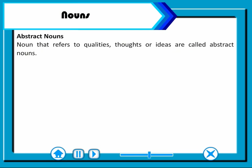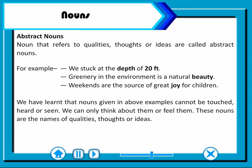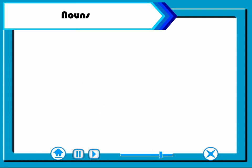Abstract nouns are nouns which refer to qualities, thoughts or ideas. For example: we struck at the depth of 20 feet. Greenery in the environment is a natural beauty. We can find a source of great joy for children. Nouns in the above examples cannot be touched, heard or seen. We can only think about them or feel them. These nouns are the names of qualities, thoughts or ideas.